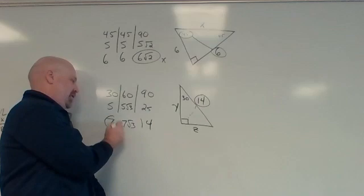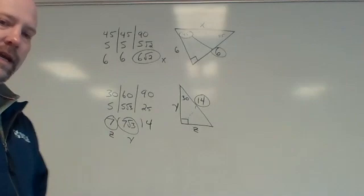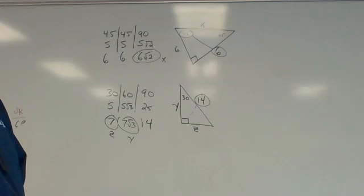Now, for this case, across from the 30 is Z. So this is Z. And this is Y. And so those are how you use those tables for 30-60-90, and 45-45-90 triangles.